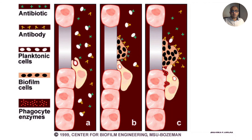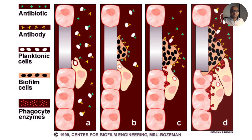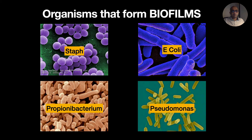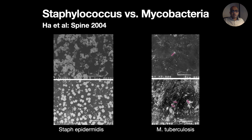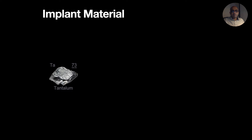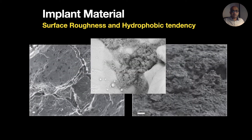Frustrated phagocytes dump their enzymes, causing surrounding tissue damage and exposing more surface for the biofilm to propagate. All organisms can form biofilms; however, the most common ones encountered in orthopedic infections are the most notorious. Even mycobacteria can form biofilms, but to a very limited extent, so implants in the presence of mycobacteria usually don't give problems. The implant material also determines susceptibility — tantalum is the least susceptible, and titanium has lesser tendency than stainless steel. More roughness of the implant surface makes it more suitable for biofilm formation, as bacteria can colonize the irregularities and topographic niches.